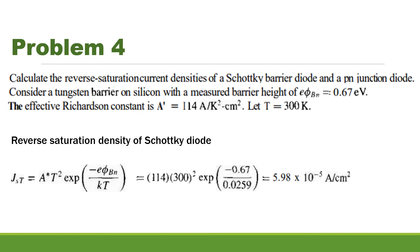We know that the reverse saturation current density of a Schottky diode is JST equal to A* T² exponential(−eφBn / kT). Substituting the values of A*, T = 300 K, φBn = 0.67 eV, and kT = 0.0259 eV, we get the answer as 5.98 × 10⁻⁵ A/cm².